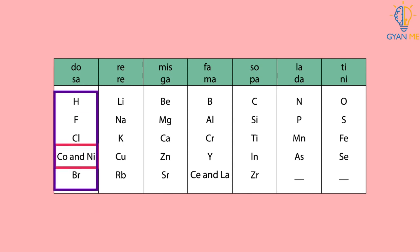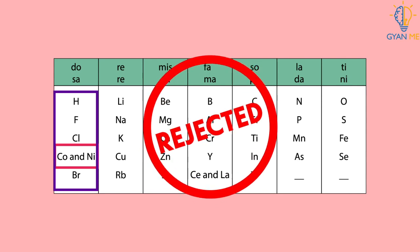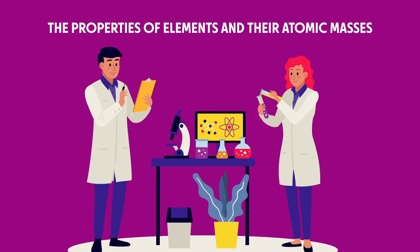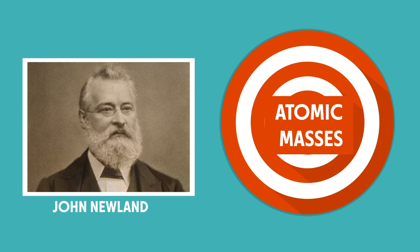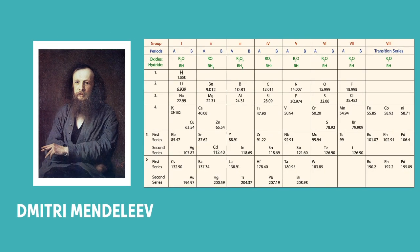Due to all these limitations, Newlands' Law of Octaves was rejected. Even after the rejection, many scientists continued to search for a pattern correlating the properties of elements with their atomic masses. Not to forget, Newlands' attempt was indeed a step in the right direction — it laid the foundation for another scientist, Mendeleev, who attempted classifying elements based on their atomic masses.